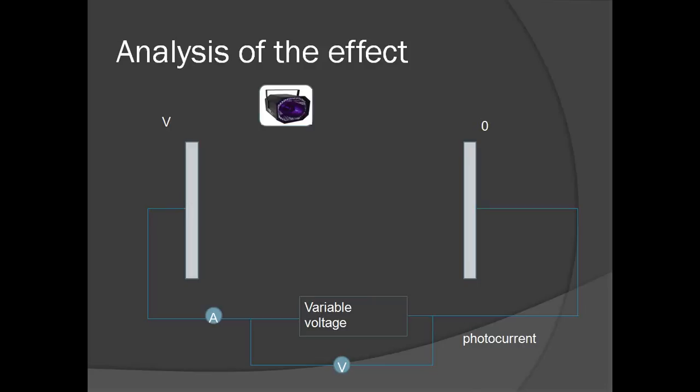If a potential difference is put between the plates using a variable power supply, then the electron not only has to escape the metal, but also traverse the potential difference in order to reach the other plate and cause a photocurrent to flow. The energy of the photon therefore needs to be larger than the work function of the metal plus the energy lost in traversing the potential difference.